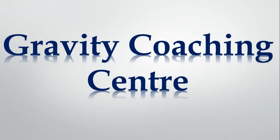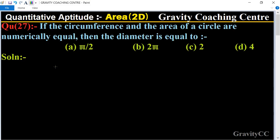Welcome to our channel Gravity Coaching Centre. Quantitative Aptitude, chapter Area, question number 27. If the circumference and the area of a circle are numerically equal, then the diameter is equal to which option? According to the question, the circumference and the area of the circle are equal.